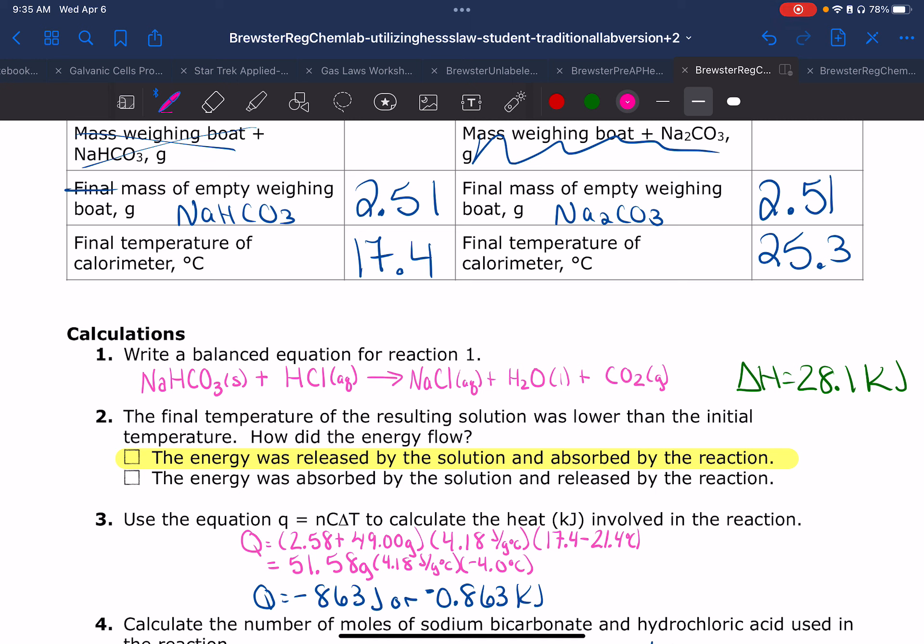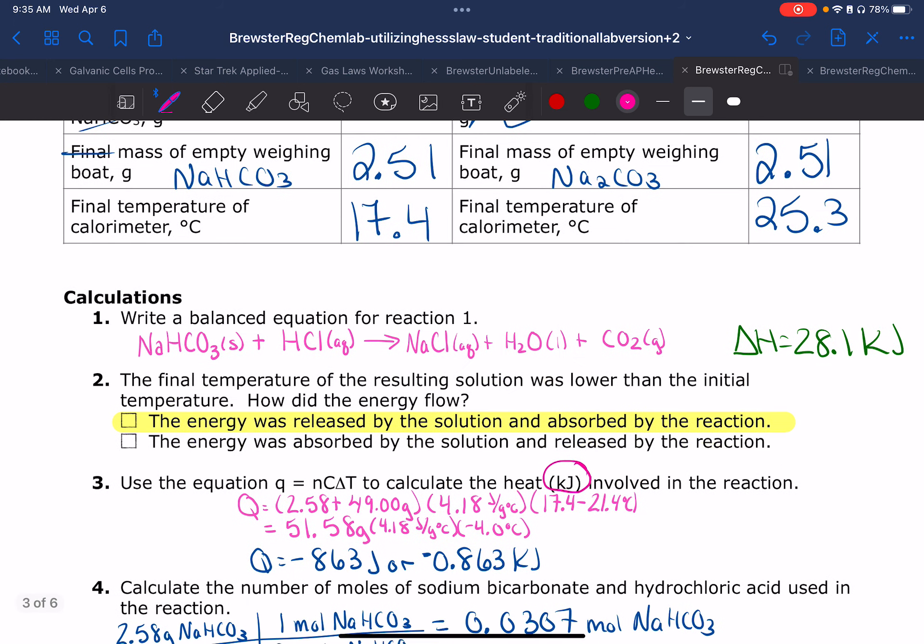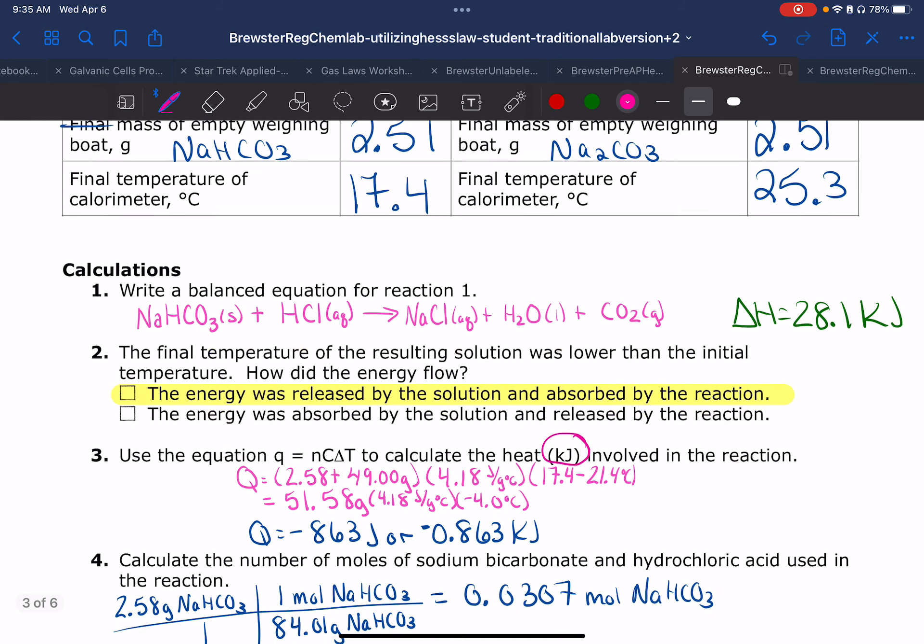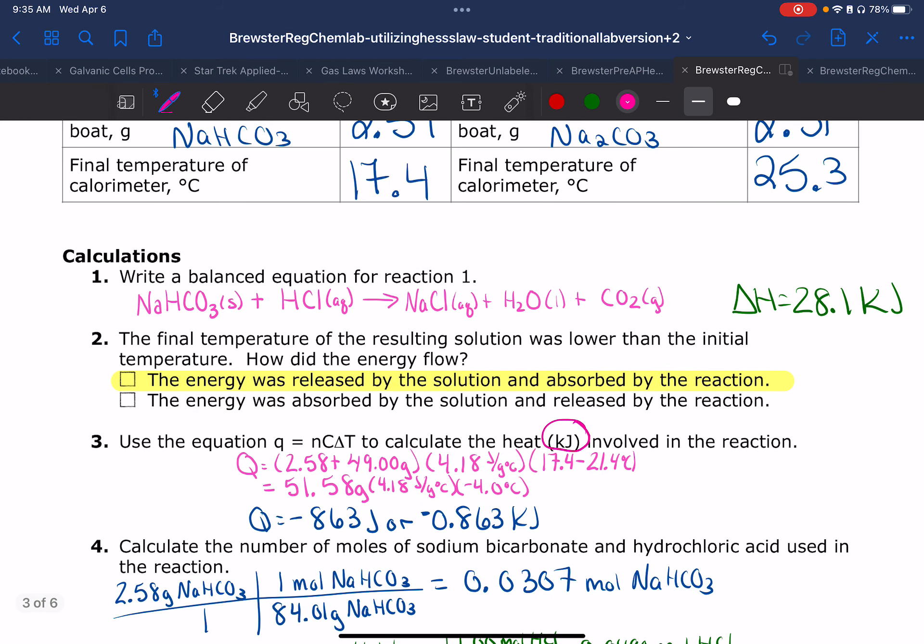We're going to get our Q - it's going to be negative because I had a temperature drop. Then I need to divide by a thousand to get kilojoules because it said that it wanted kilojoules. Then it says to calculate the number of moles of sodium bicarbonate and hydrochloric acid used. We need that because we got to figure out who is limiting. If you go back to our balanced equation, you'll see that this is a one-to-one ratio between the two of them.